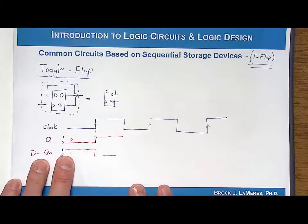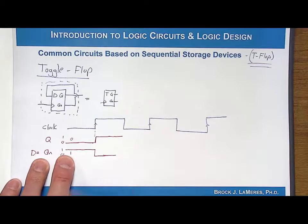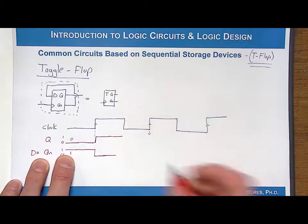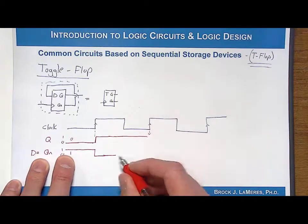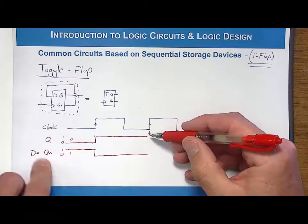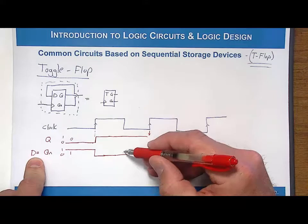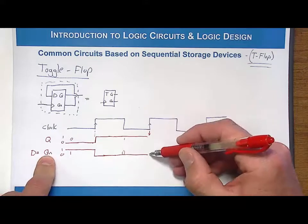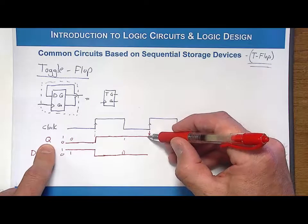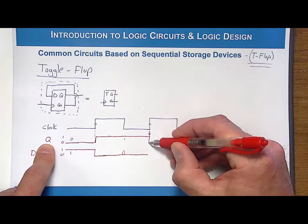So when is the next transition going to occur? It's updated at the rising edge of a clock. When we get to this moment in time, we're going to look at what is on D. Well, D is now containing a zero because that's what's on QN. So we're going to update Q with a zero.